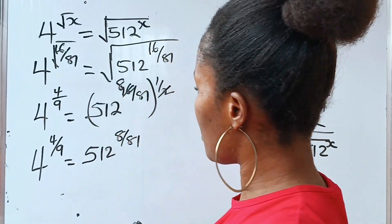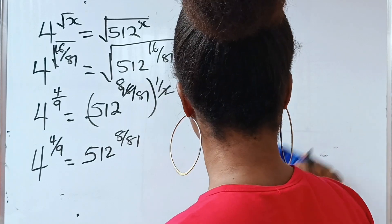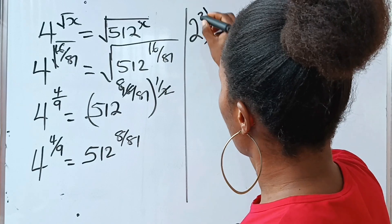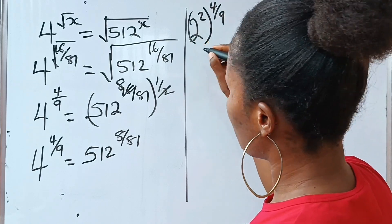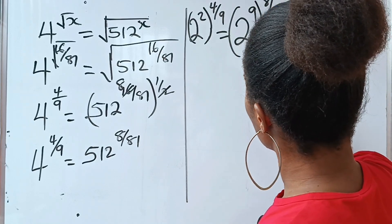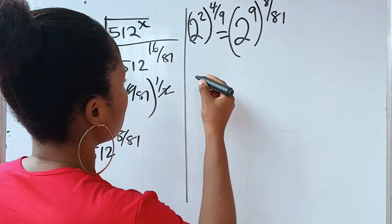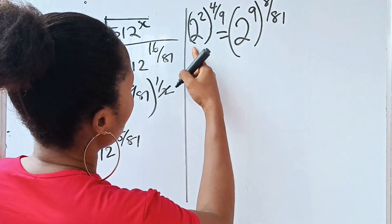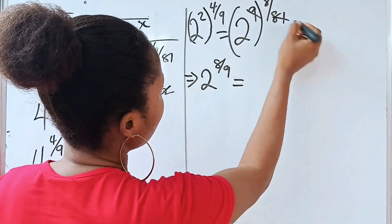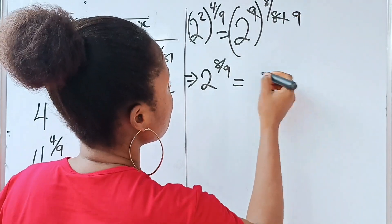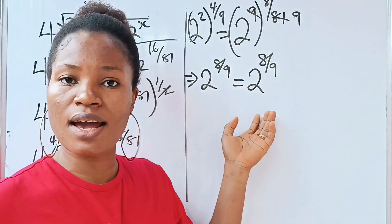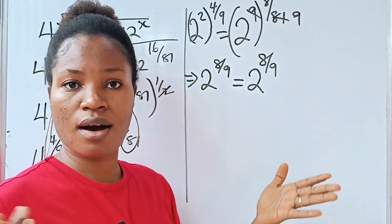So we have 8 divided by 81. Now 4 is the same as 2 to the power of 2, raised to the power of 4 over 9, giving 2 to the power of 8 over 9. And 512 is the same as 2 to the power of 9, raised to the power of 8 over 81. Since 9 divides into 81 nine times, the right side is also 2 to the power of 8 over 9. The left-hand side equals the right-hand side, which proves our answers are correct.